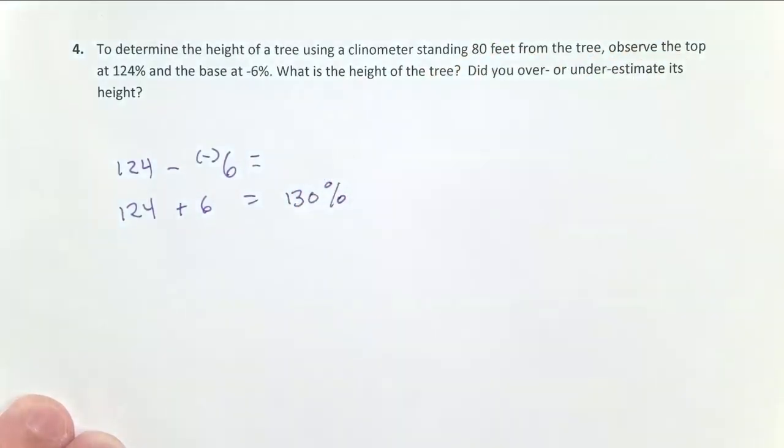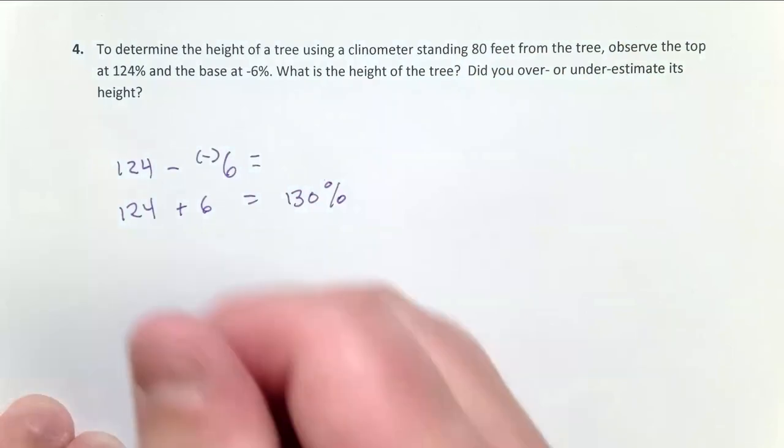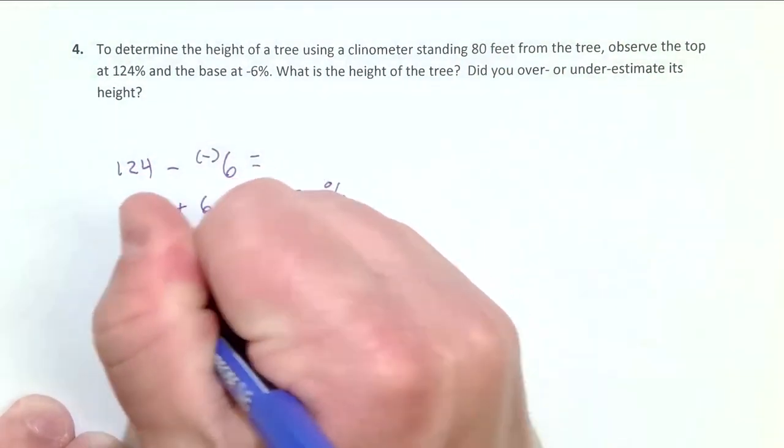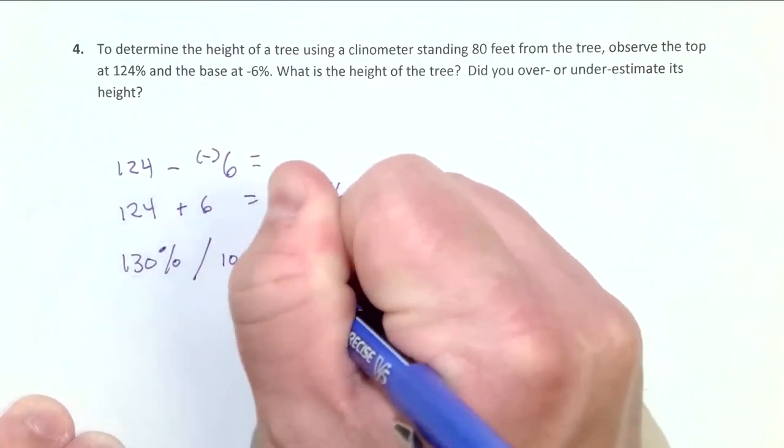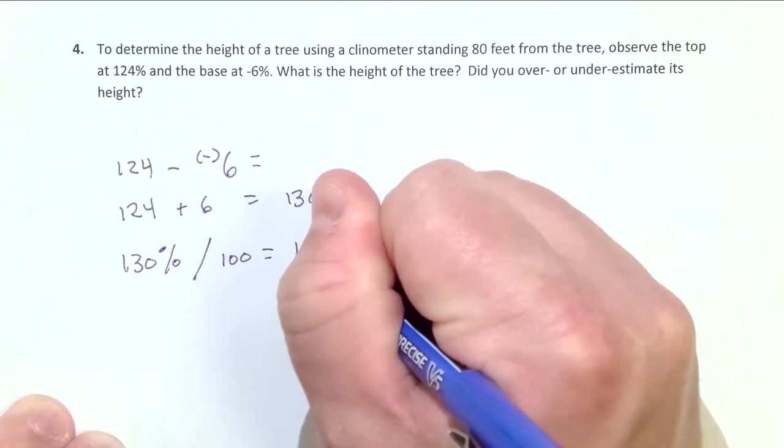Now if I want to convert a percent into a proportion, I divide it by 100. So 130 percent divided by 100 is equal to 1.30.